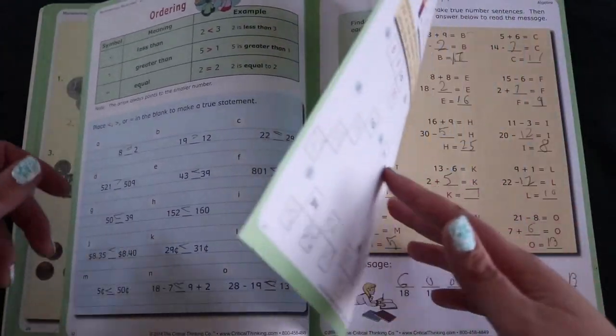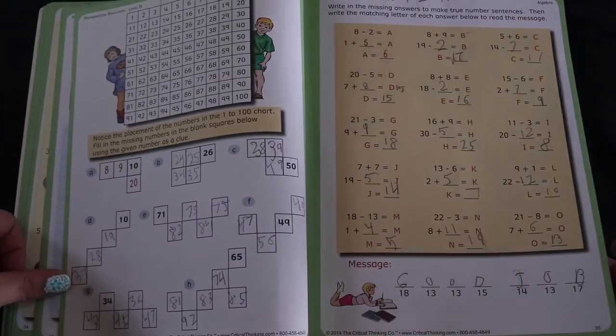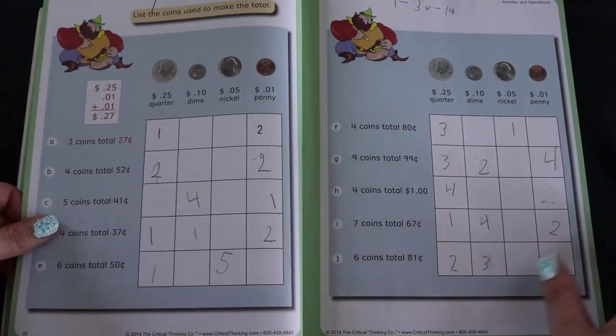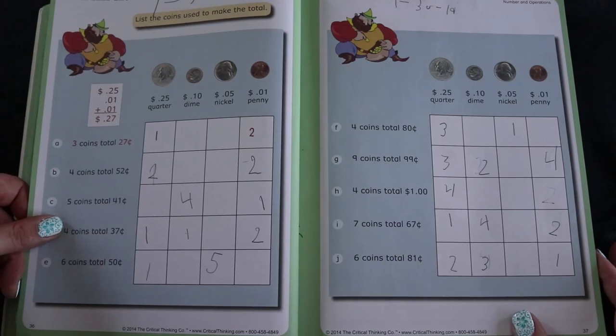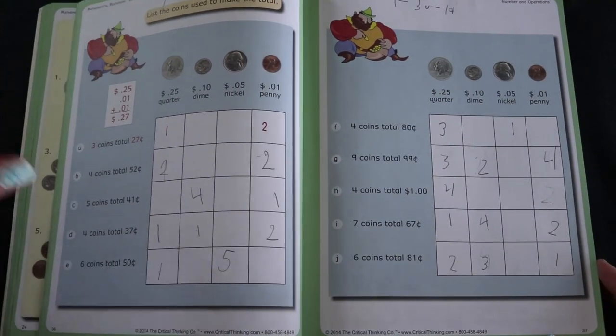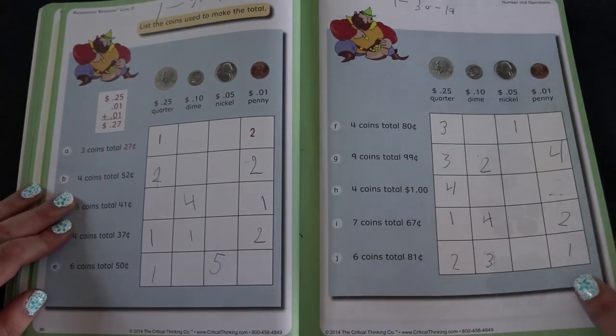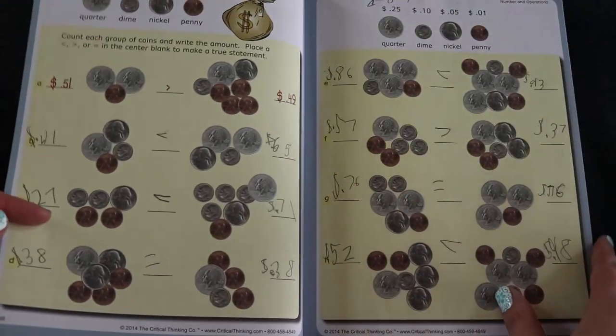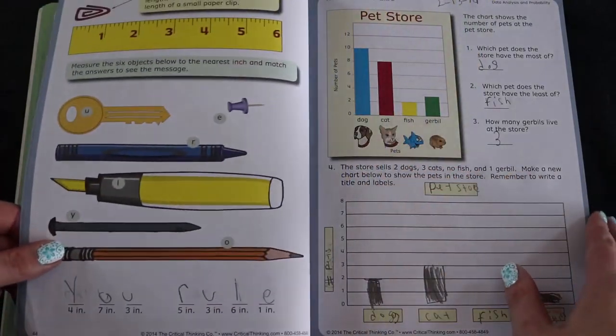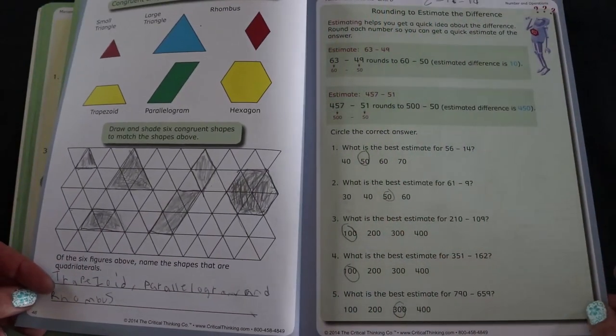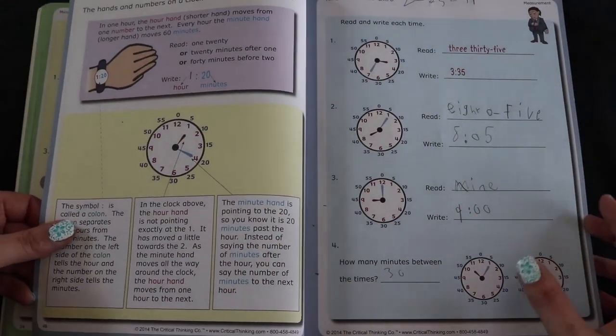Numbers and operations again. And here's algebra. I think it's really great that they start basic ideas and concepts in algebra early like this, because then it just gets them more comfortable for when they really get into it, like in the upper grades and middle school and such. Measurement, data analysis, and probability, more geometry.